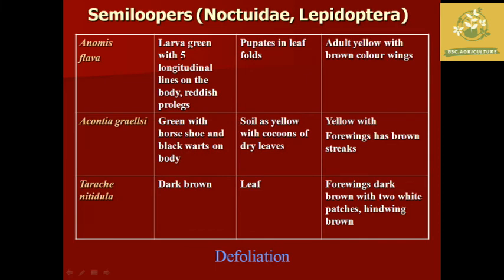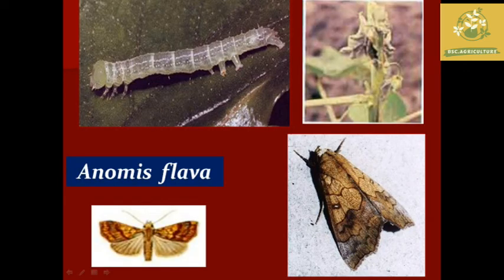Next is the Semi-looper. It has 3 pairs of prolegs. The name, shape, and color indicate its infection. Pupation is different from other species. The larvae have an anonymous flavor pattern and other distinguishing features.